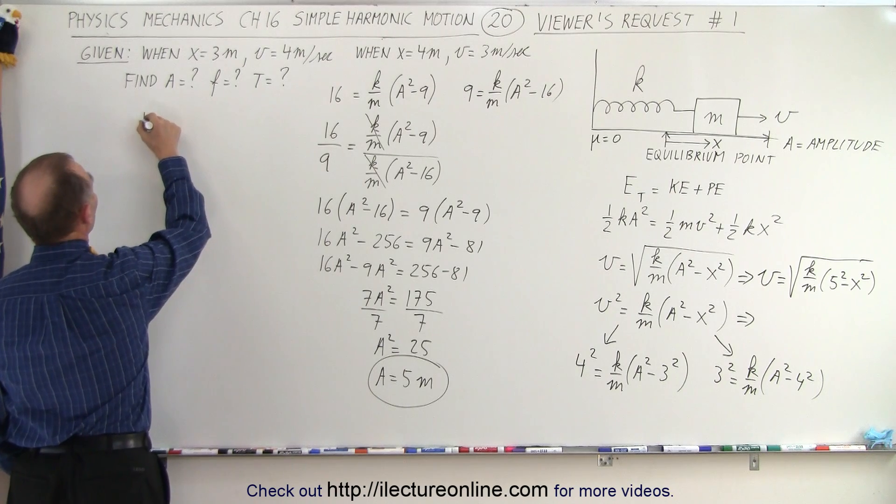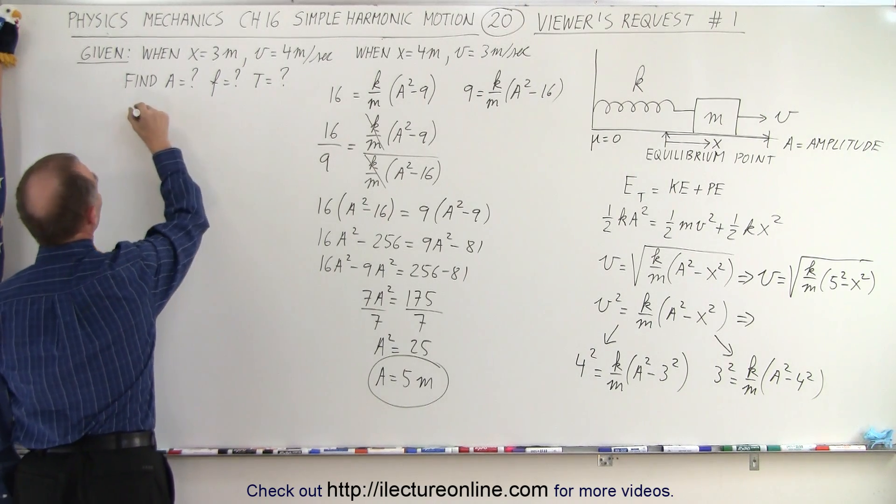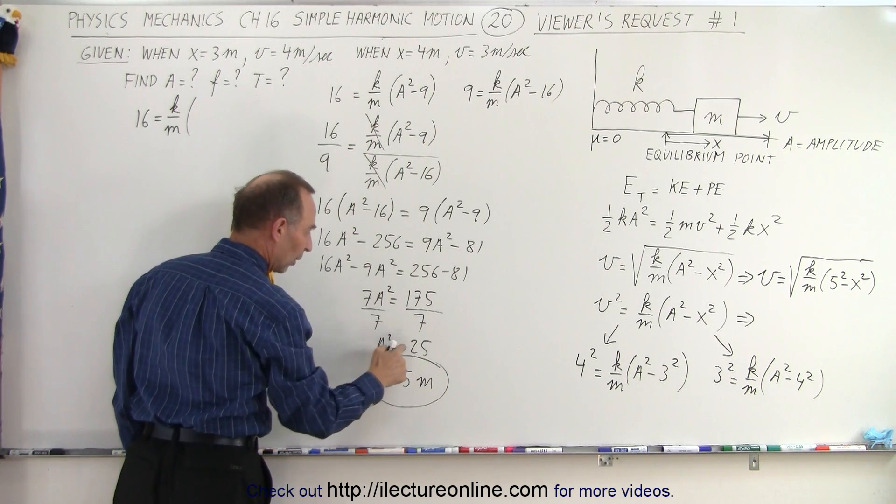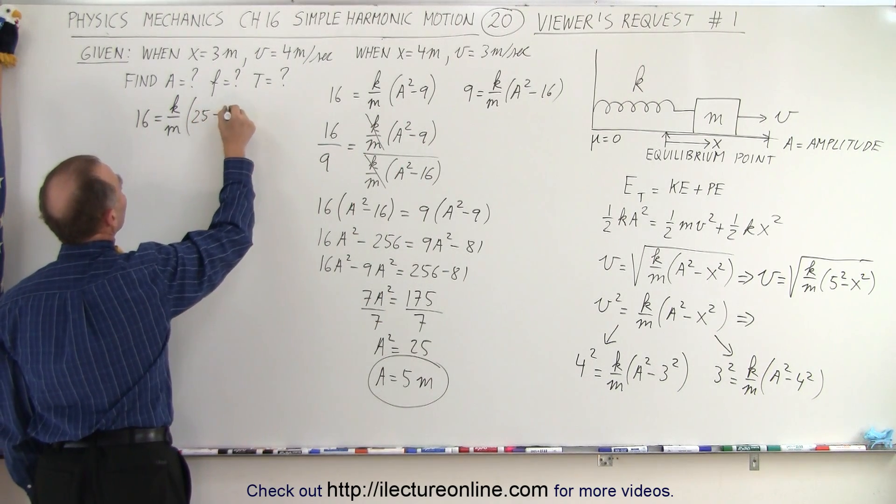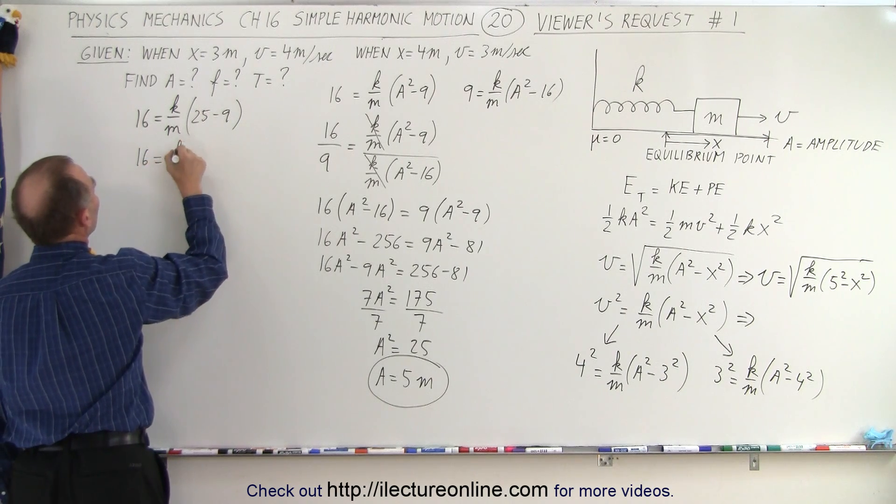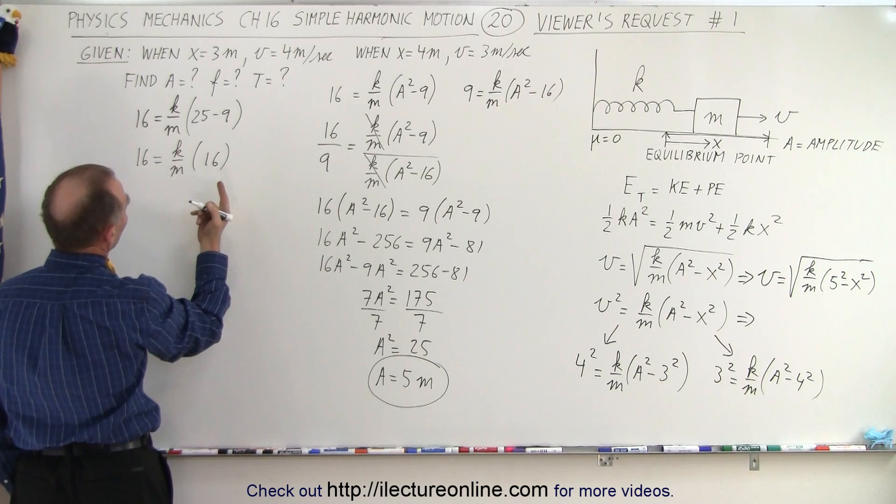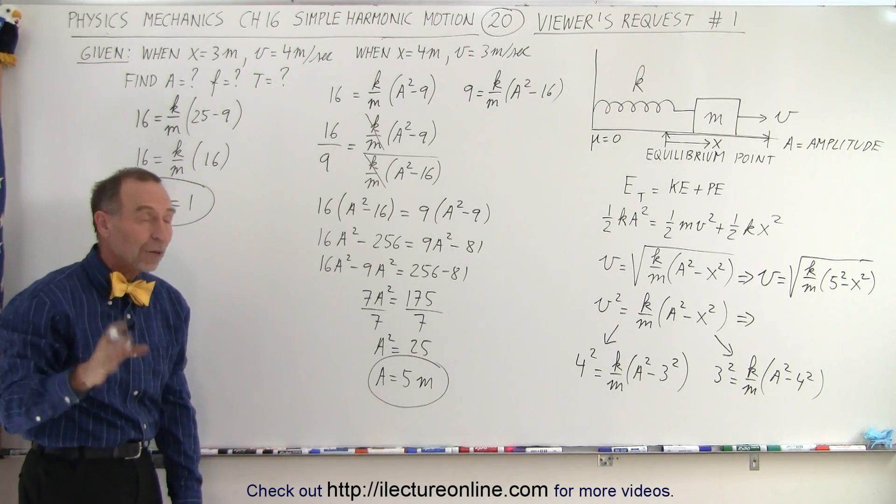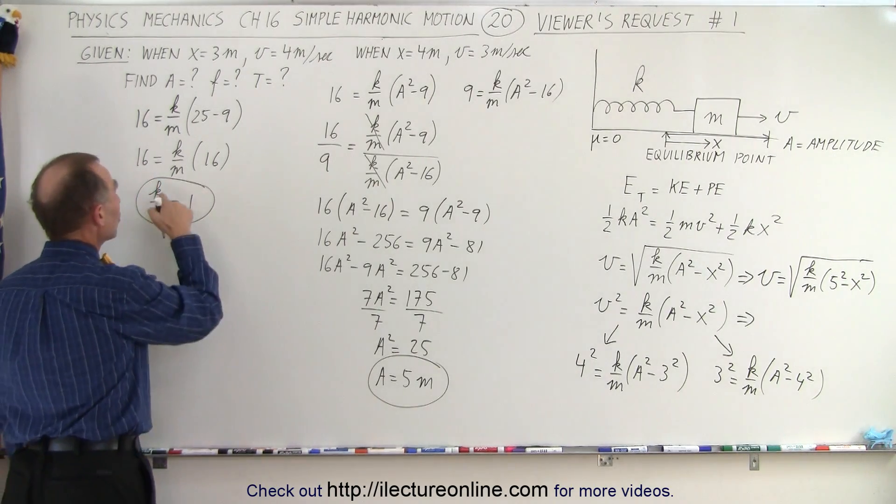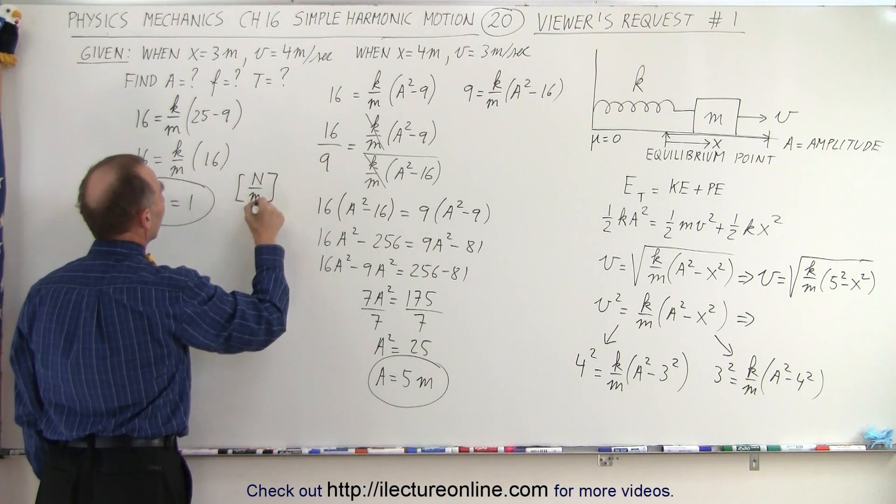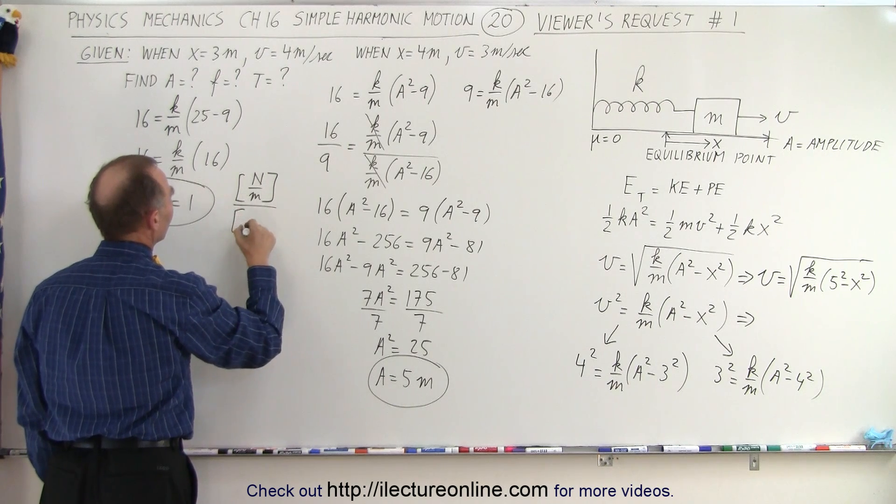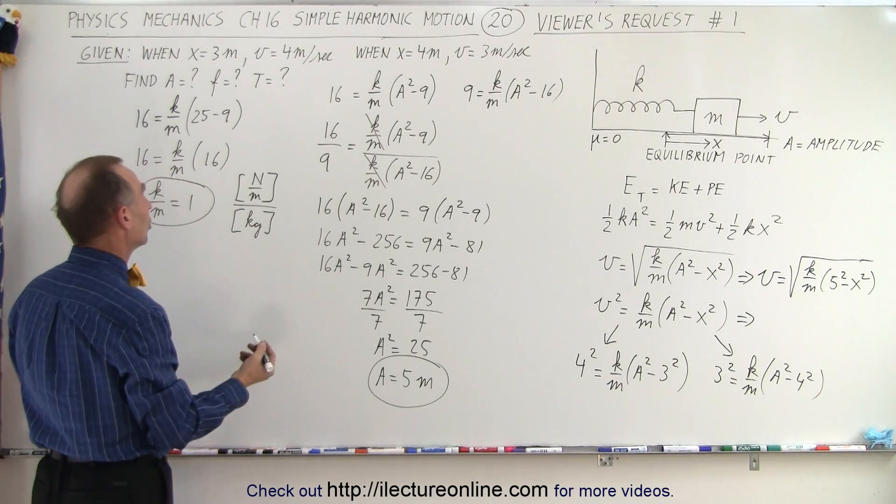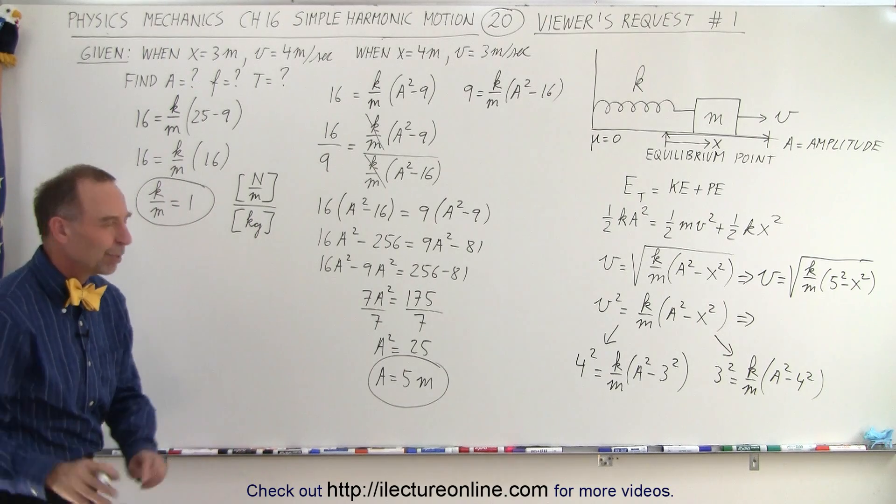So let's take the left equation, 4 squared. I don't need to write 4 squared, I can simply write 16 equals k over m times, instead of a squared, we'll write what a squared is equal to which is 25 minus 9. So 16 equals k over m times 16. That means of course that k over m is equal to 1. We don't know what k is, we don't know what m is, but the ratio is equal to 1. Notice that the unit for k is equal to newtons per meter and the units for mass is equal to kilograms. And so that would be 1 newton per meter times kilogram. And of course, a newton is a kilogram meters per second squared. We can simplify that, but it's not really necessary.